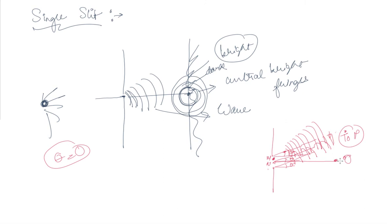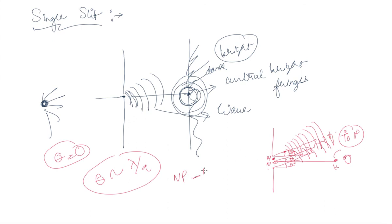Beyond the central point, in the upper and lower parts, theta is approximately equal to lambda upon a. This derivation comes from the path difference: if we take points m and n, the path difference n·q equals a·sin(theta). Calling one point l, we have l·p equal to n·q, which equals a·sin(theta).